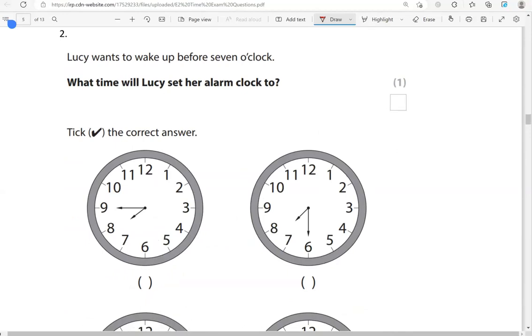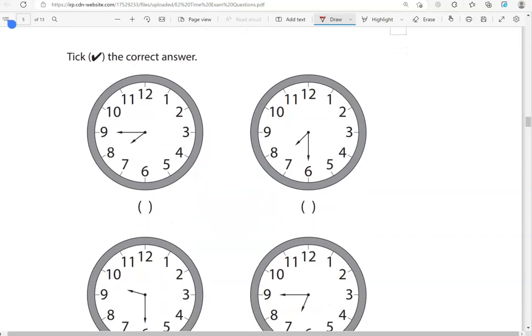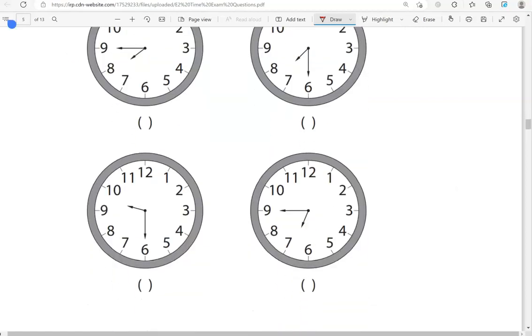Lucy wants to wake up before 7 o'clock. What time will Lucy set her alarm clock to? Tick the correct answer. The first one is quarter to 8, so that is after 7. Second option, that is half past 7, so it's not before 7. Third option, that is half past 9. Again, that's not before 7. And we have quarter to 7, which is 15 minutes before 7. So, this is the correct option.